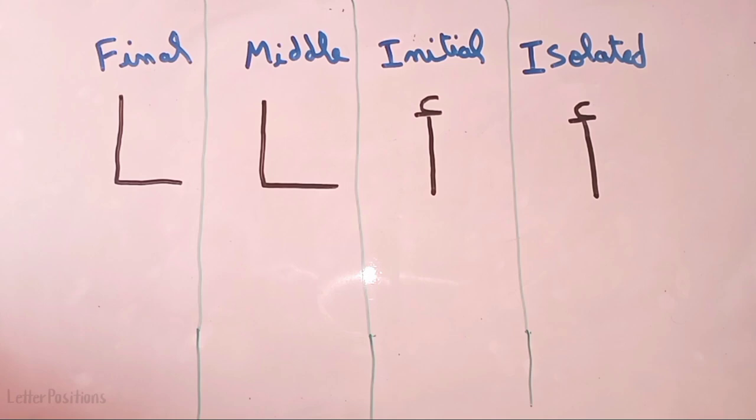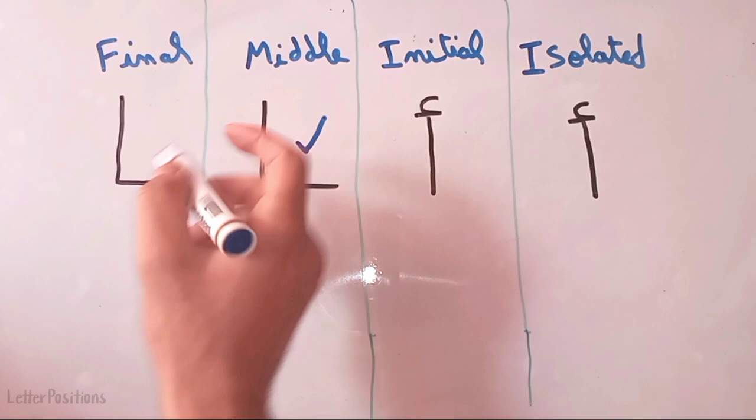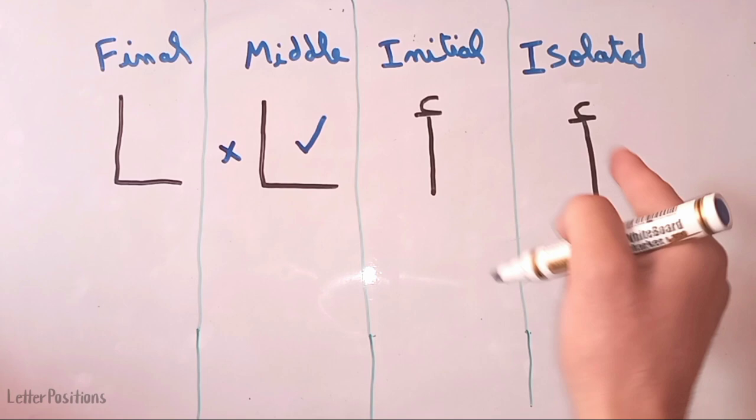In the middle position, alif can be connected with the right side — with the other letters — but you cannot connect it with the left side. You can connect it with the letters on the right side, and you cannot connect it with the left side.